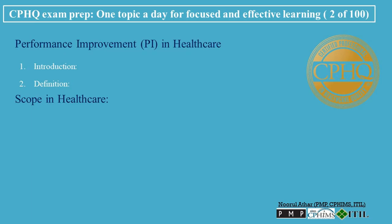Scope in Healthcare: PI isn't limited to just clinical outcomes — it extends to all facets of healthcare, be it administrative, technological, or operational. Clinical processes might include reducing hospital-acquired infections, improving surgical outcomes, or decreasing patient wait times for critical treatments. Non-clinical processes such as billing, patient scheduling, electronic health record (EHR) system efficiency, and supply chain management can also benefit from PI.